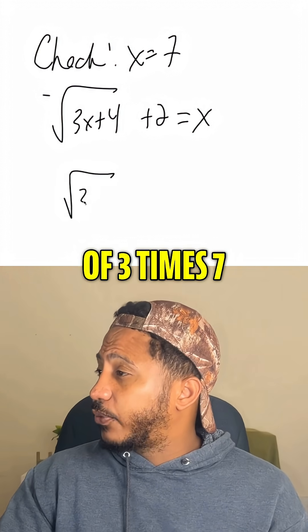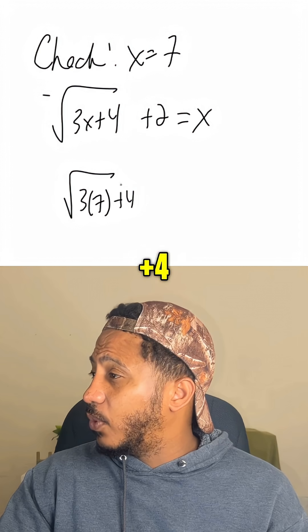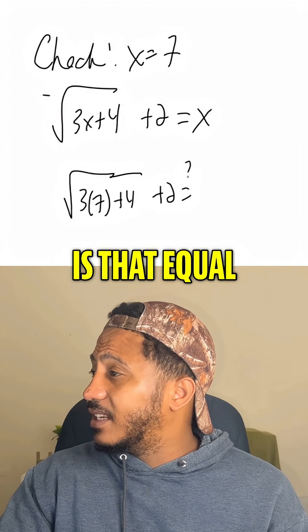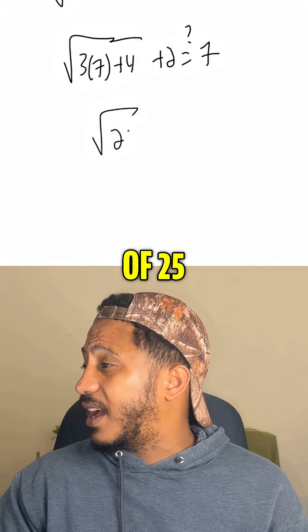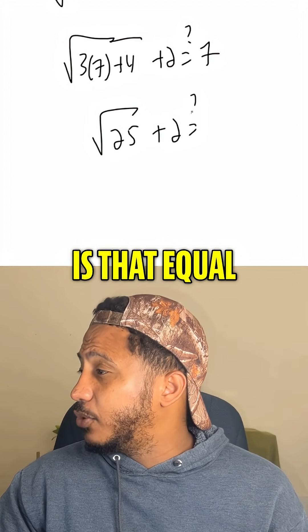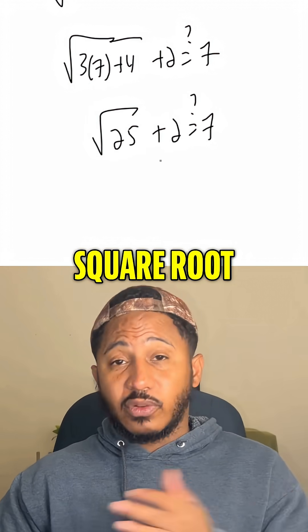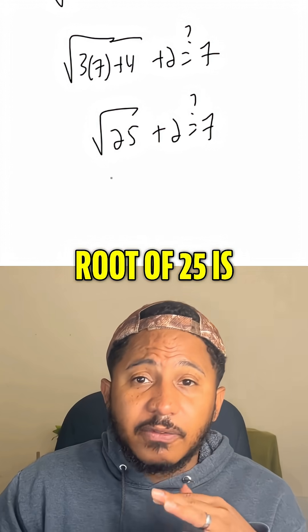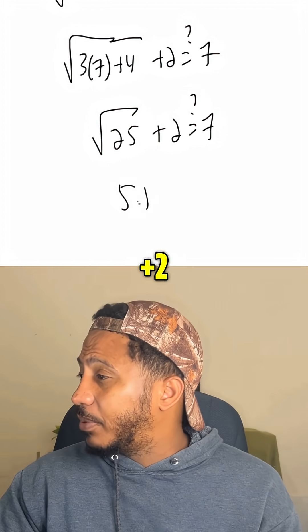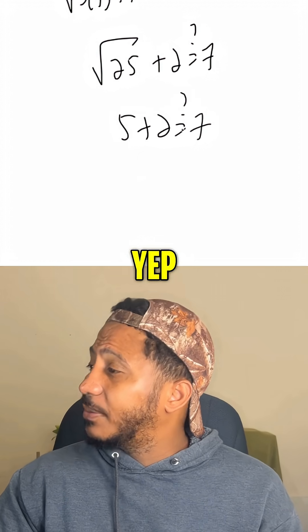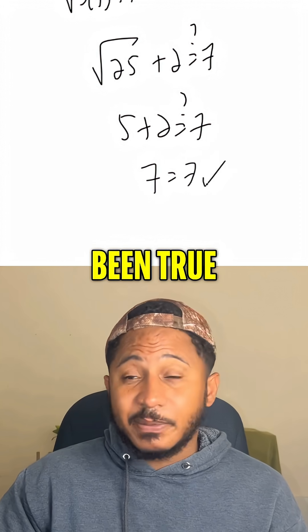So if we check 7, we say, okay, well, that's the square root of 3 times 7 plus 4 plus 2. Is that equal to 7? So the square root of 25 plus 2, is that equal to 7? Again, this is the principal square root, the positive square root. So the positive square root of 25 is 5 plus 2. Is that equal to 7? Yep, 7 equals 7. All my life that's been true.